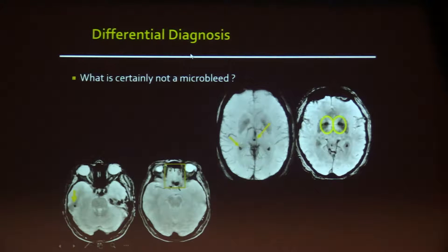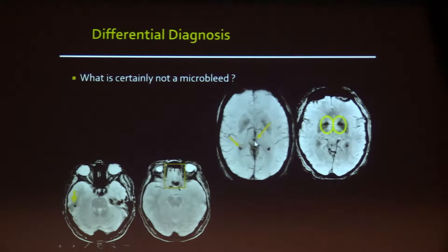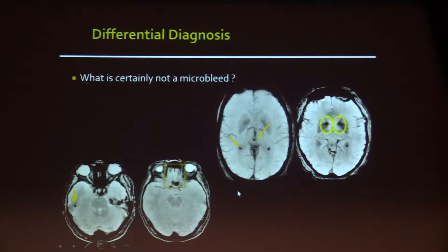Not all dark dots on MRI correspond to microbleeds. The pineal gland is often calcified and appears dark on susceptibility-weighted imaging — this is of course not a microbleed. Similarly, calcification of the choroid plexus is not a microbleed. Dark dots in the gray nuclei are also not microbleeds. Typical false diagnoses include partial volume effects at the skull base, and it can be difficult to confirm microbleeds when dark dots are at the level of the petrous bone.